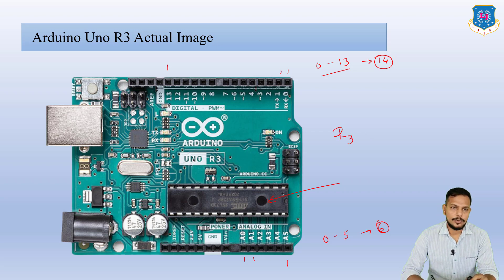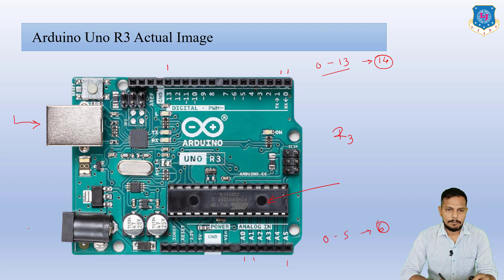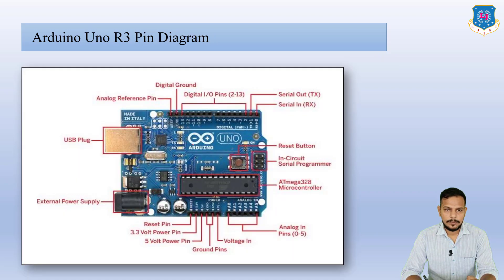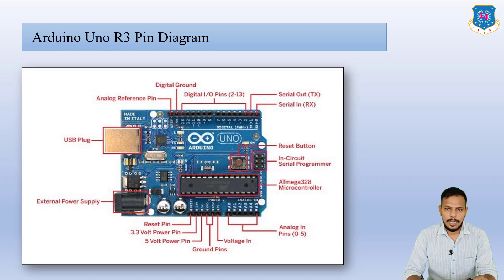Here you can see the USB connector — you can connect a USB port on this side — and a power cable connector. The pin diagram of Uno R3 shows: USB plug, external power supply, analog reference pin, digital ground, digital input pins 2 to 13, and serial out and serial in. Pins 0 and 1 are the serial in and serial out pins.